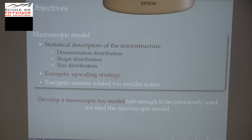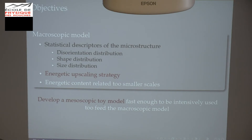For instance, the disorientation distribution at each material point — I can have the mean and the standard deviation of such a distribution, or the shape and size distribution of the microstructure. The energetic upscaling strategy is related to keeping the energetic contributions at different scales, though I will reduce the validity of the model to have a manageable macroscopic model in the end. To do that, I need a toy model at the scale of the polycrystal to make many computations and create a database to feed the macroscopic model.